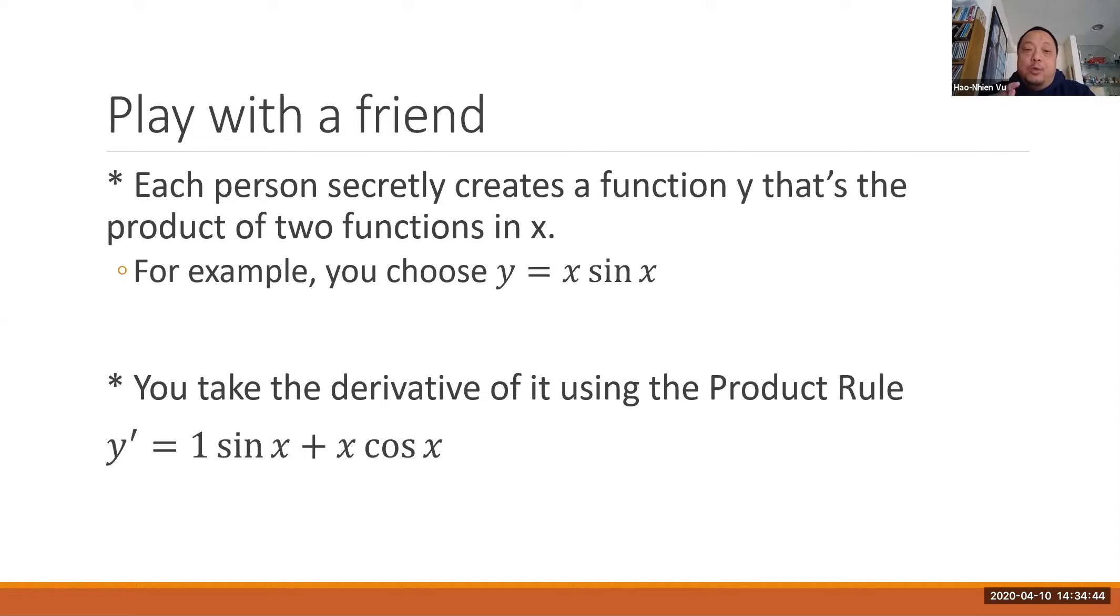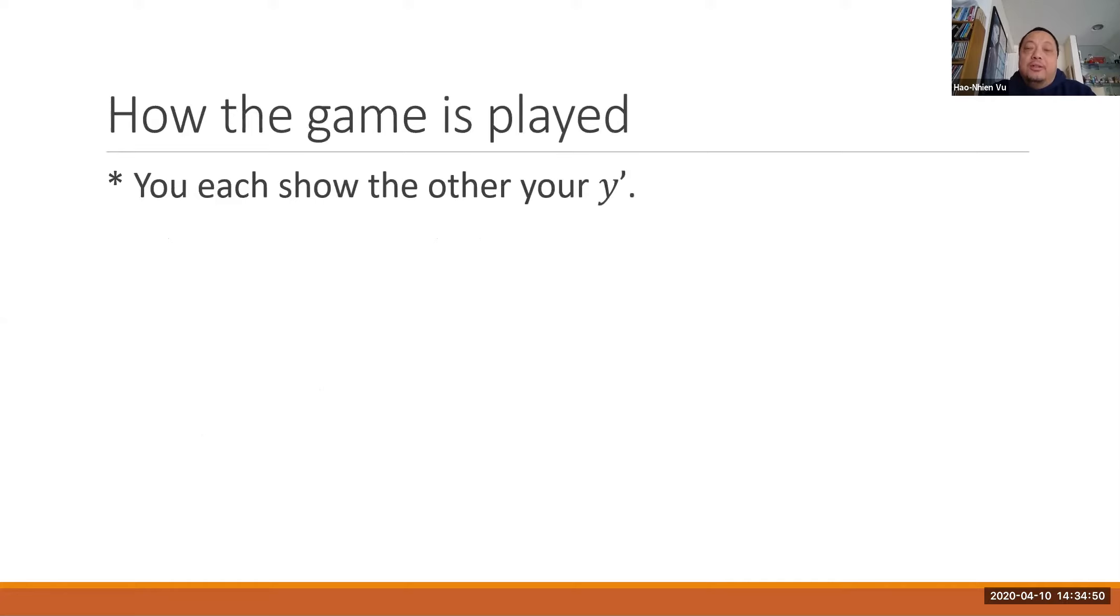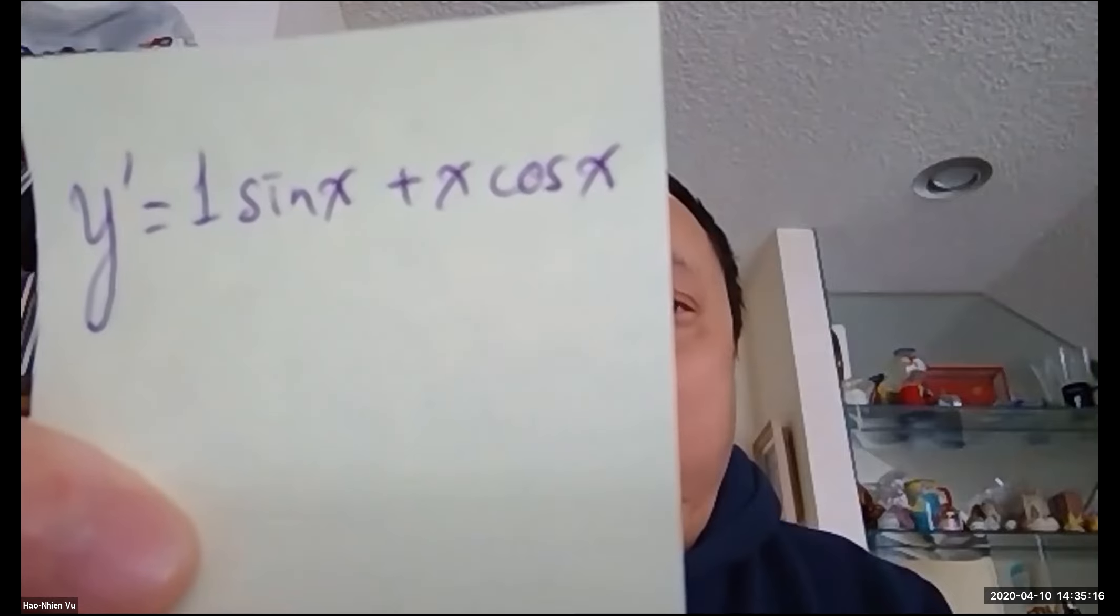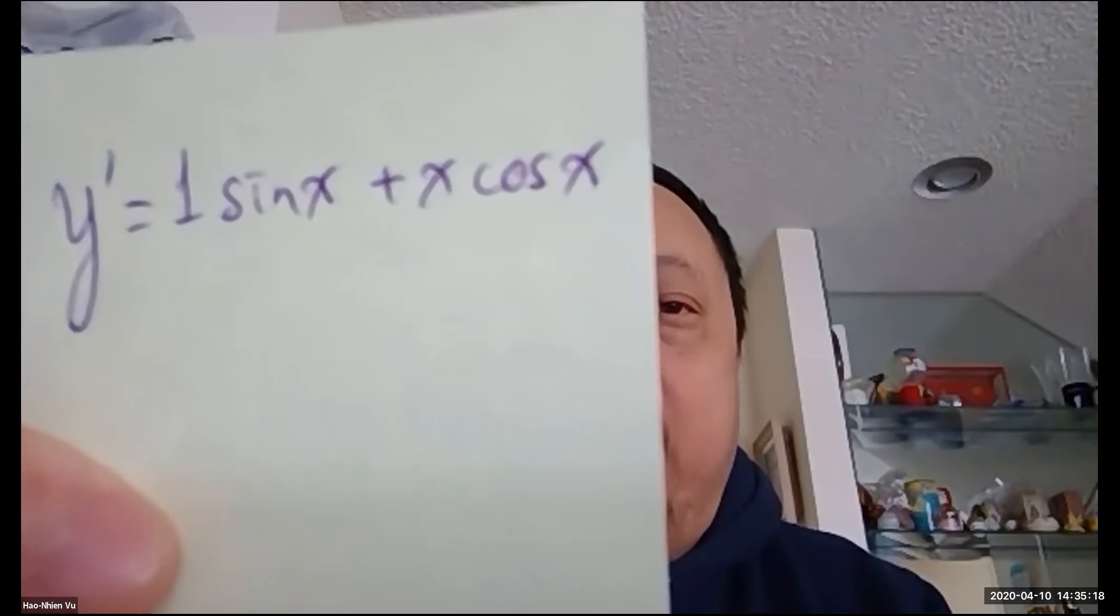I'll go back to that number one that we'll leave there in the expression. So this is how it's played. You show your friend your y prime and your friend shows you her y prime. For example, you show your friend y prime equals one sine x plus x cosine x.